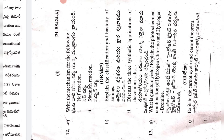Twelfth A: write the mechanism for the following — Neff reaction and Mannich reaction. Twelfth B, first part: explain the classification and basicity of amines. Twelfth B, second part: discuss the three synthetic applications of diazonium salt. Thirteenth A: what is quantum yield? Explain the photochemical combination of hydrogen-chlorine and hydrogen-bromine. Thirteenth B: explain the Carnot cycle and Carnot theorem.